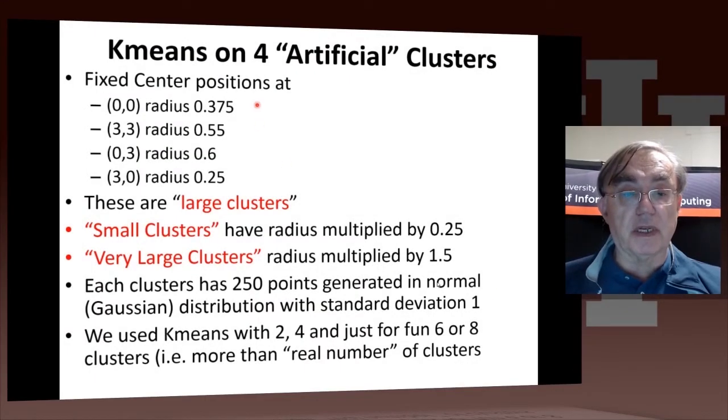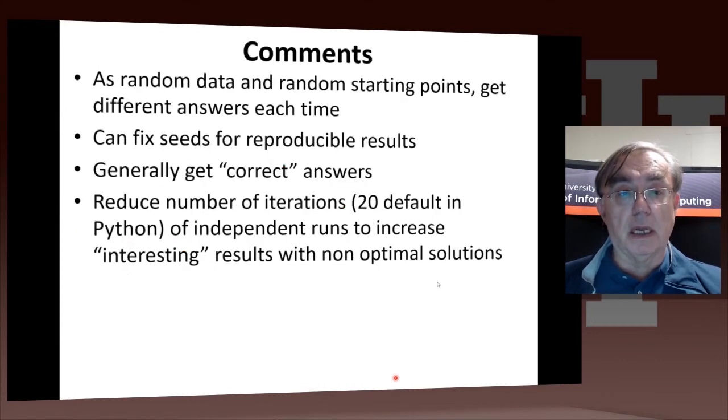So here are our center positions, and say we run k-means with two, four, six, or eight clusters. This is just stating again what I already pointed out, what our artificial clusters are, and I point out you get different answers each time.